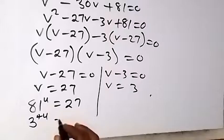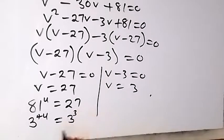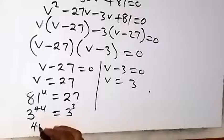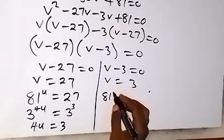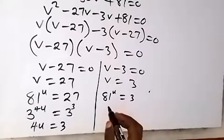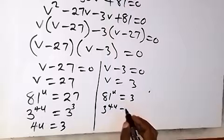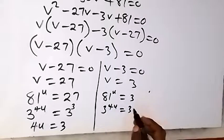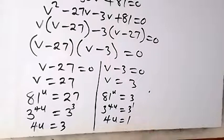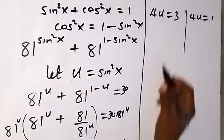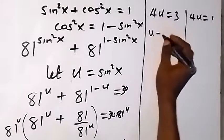For the first case, 81^u equals 27. We write 81 and 27 to base 3: 3^(4u) equals 3^3. Since the bases are equal, equating the powers gives 4u equals 3. For the second case, 81^u equals 3, which is 3^(4u) equals 3^1, so 4u equals 1.